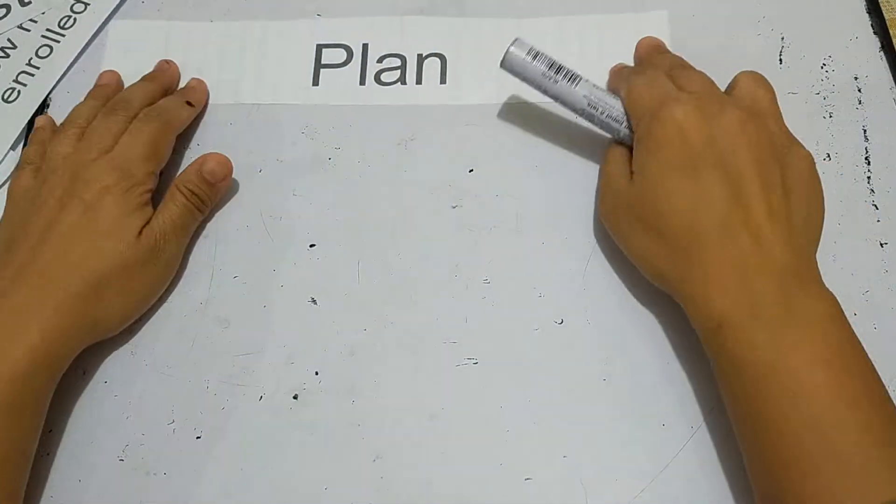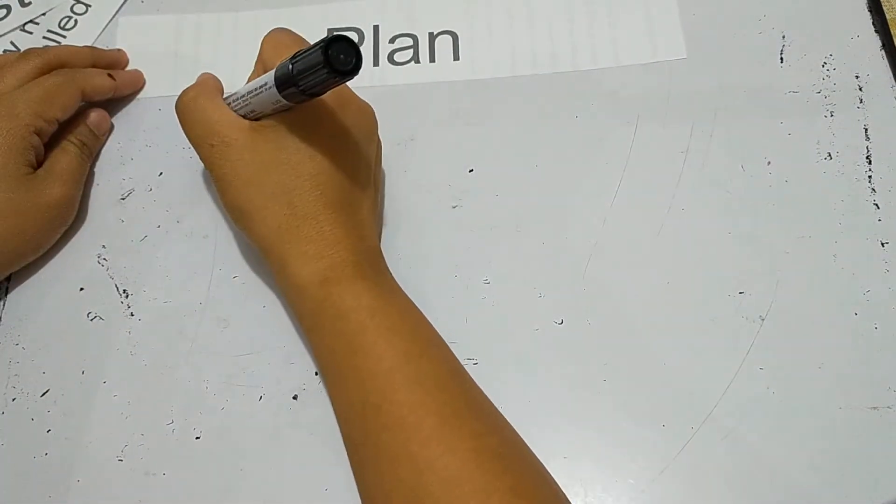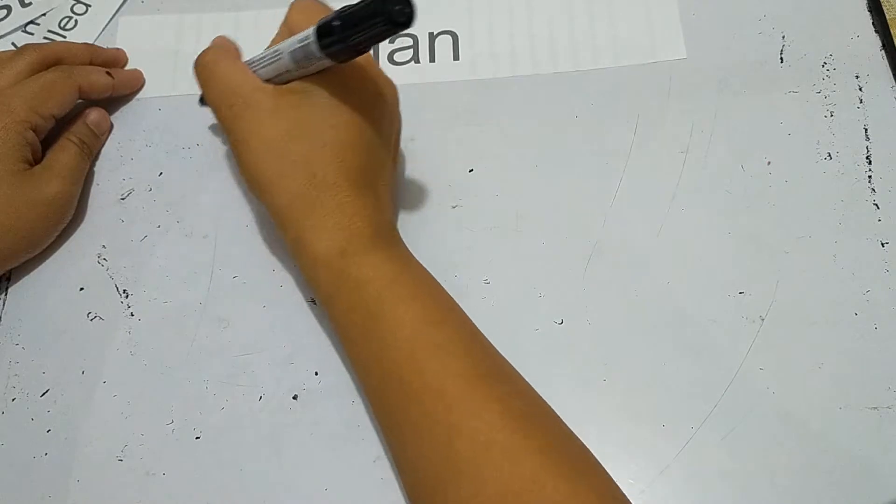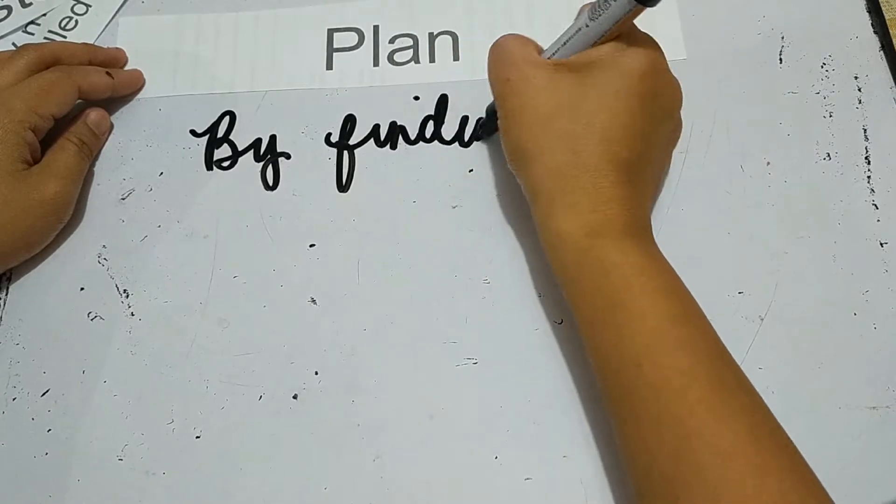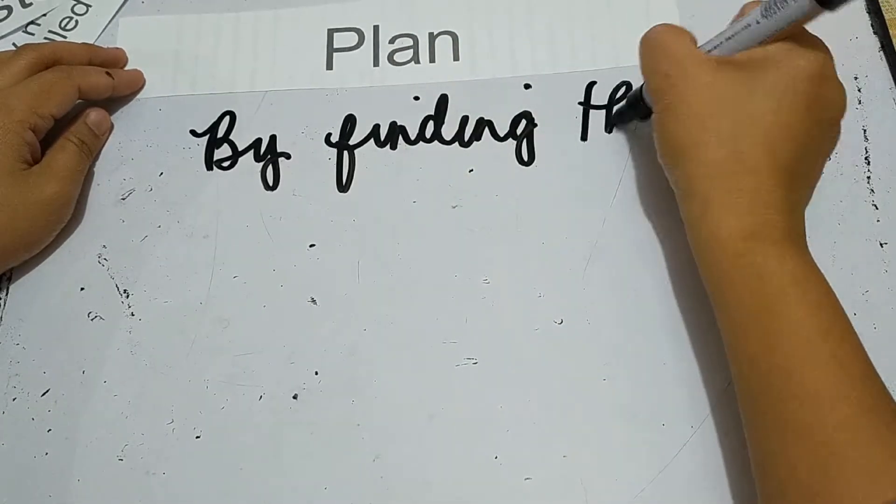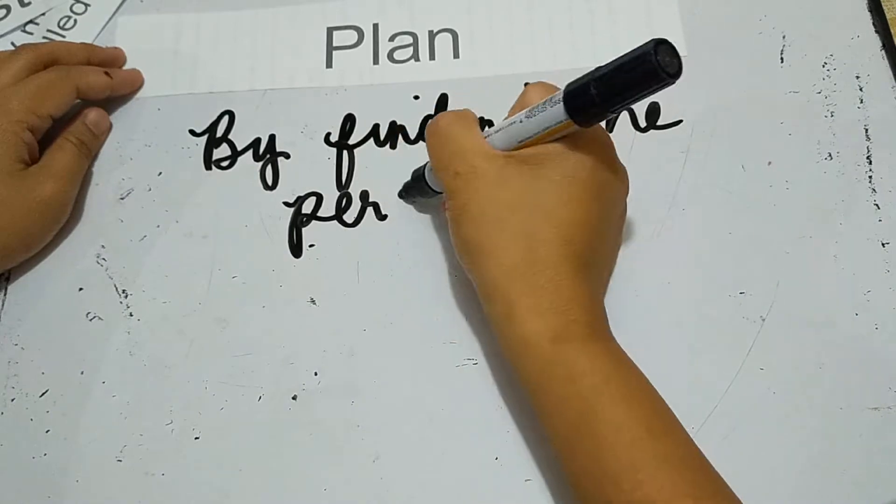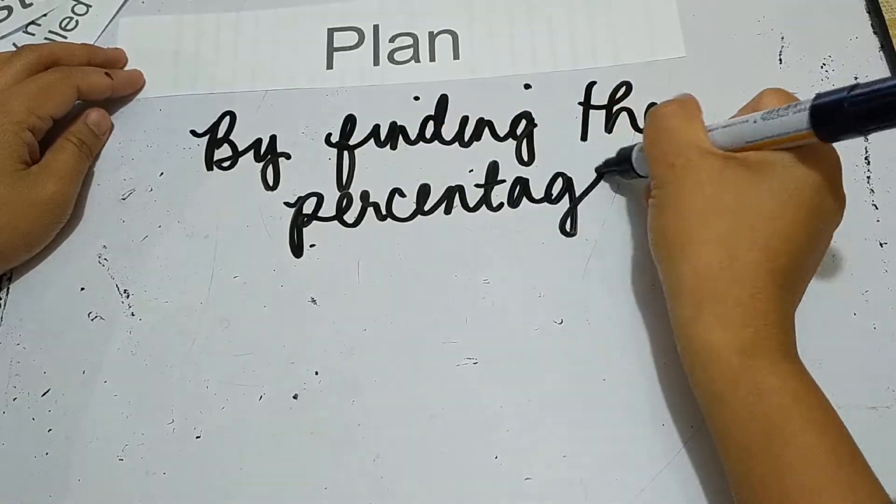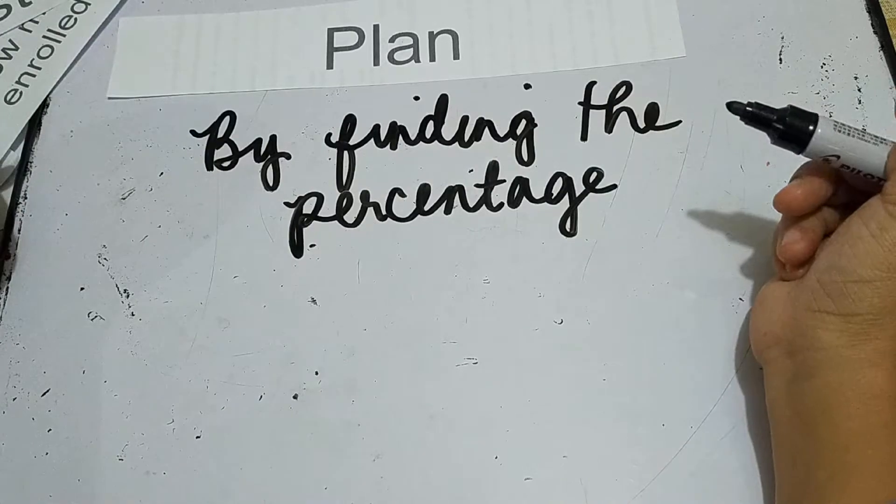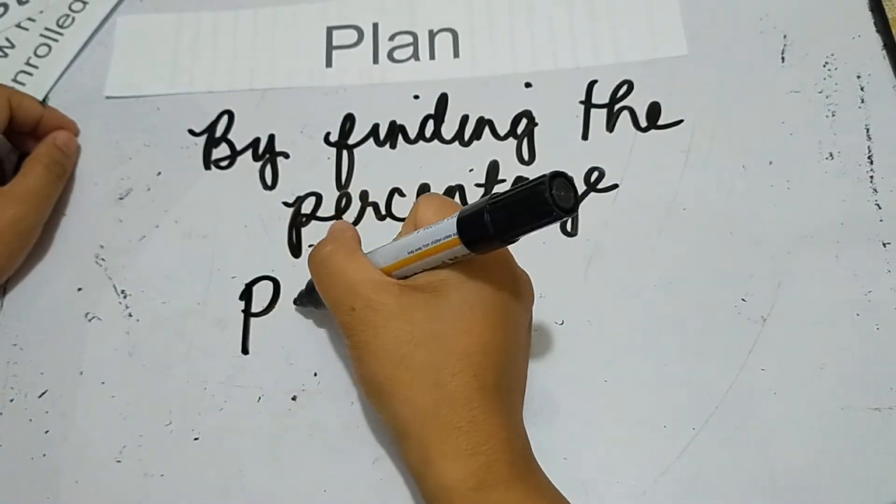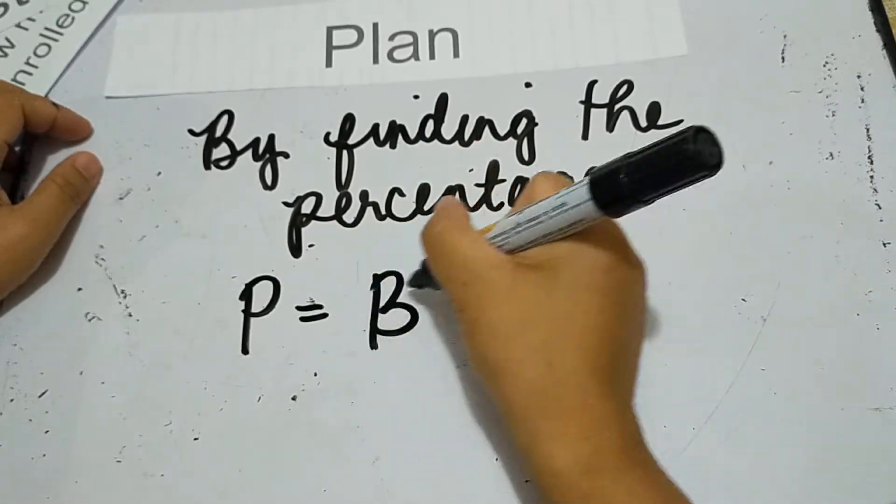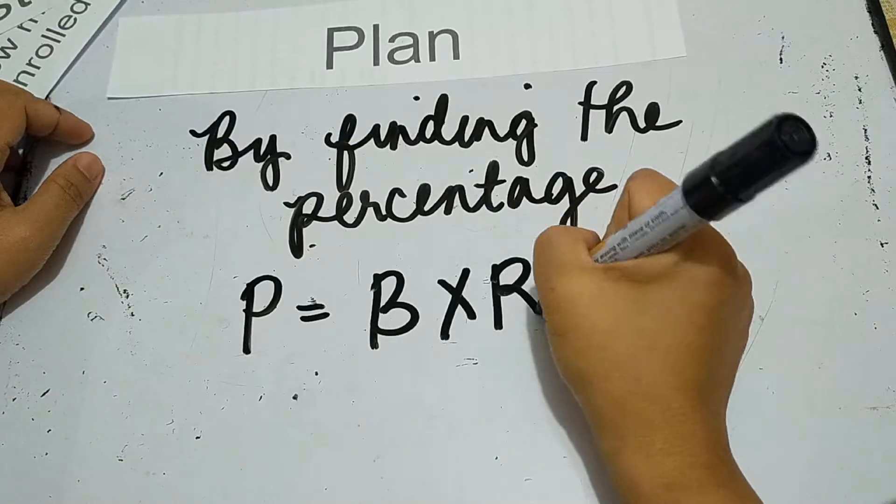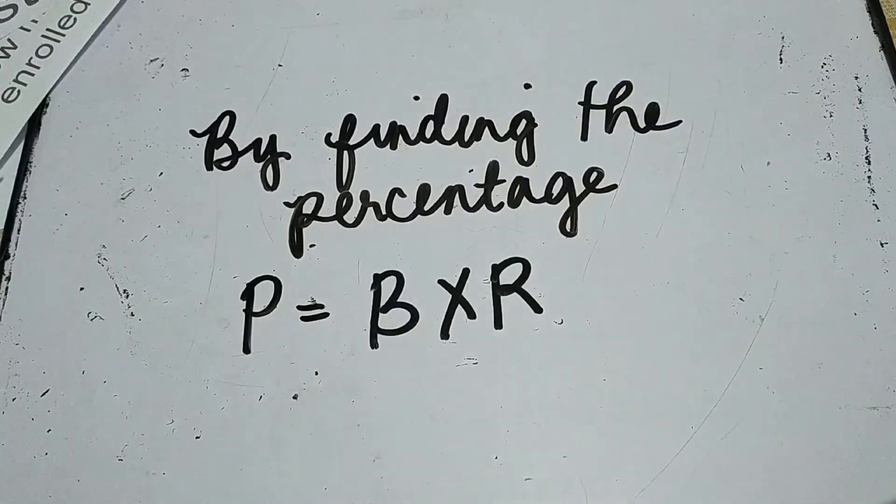Under the plan, how will you solve the problem? By finding the percentage. What is the formula? Percentage equals base times rate.